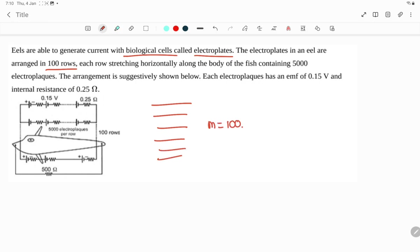In each row there are 5000 electroplates in the body of the fish, meaning n equals 5000. Each electroplate has an emf of 0.15 volts and internal resistance of 0.25 ohms. We're asked to calculate the current.